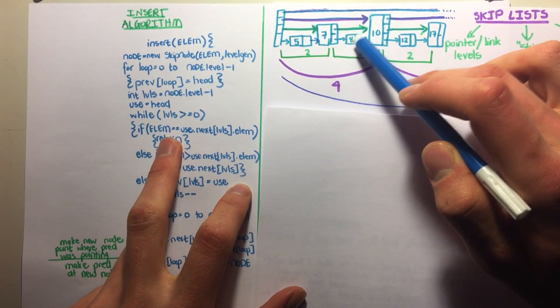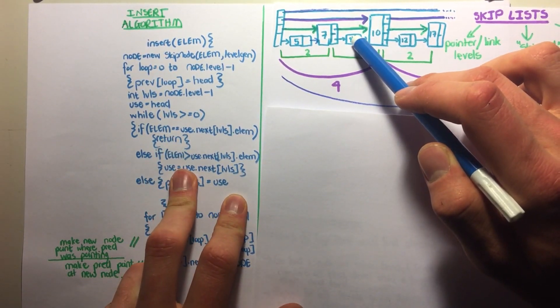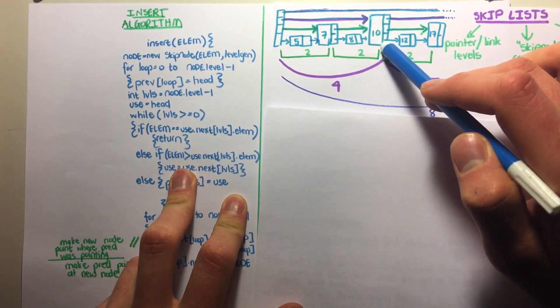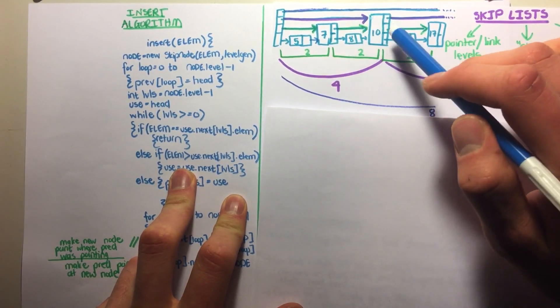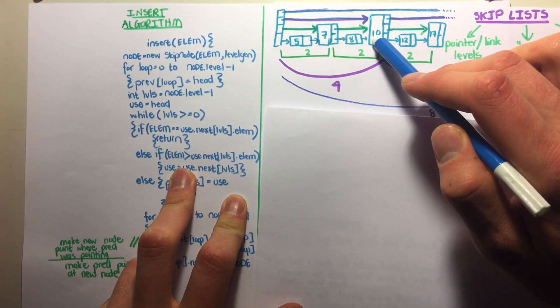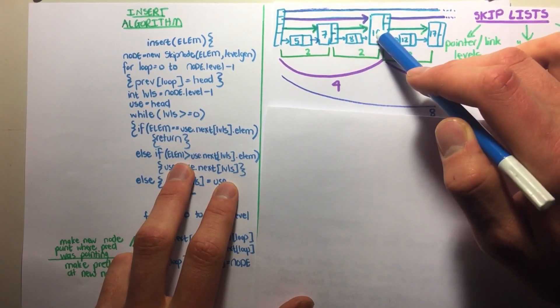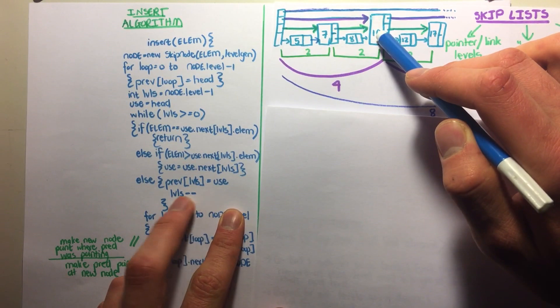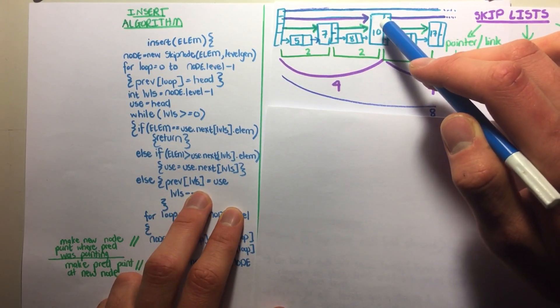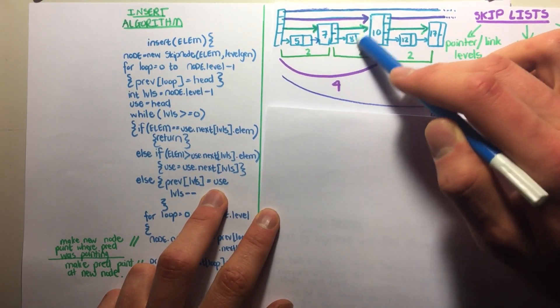Then we say, is 9 equal to 8? No. But is it greater than? Yes. Therefore use dot next will now be 10, and use will be 8. Is 10 greater than? Yes. Therefore 9 is not greater than 10. We're going to jump into this else statement, and the previous at this level will be 8.